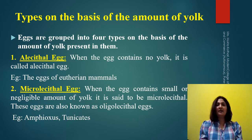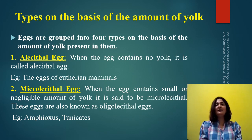If I consider the first type, that is alecithal type of eggs — here 'a' means 'not' and 'lecithal' means 'yolk' — so if the yolk is totally absent from the egg cell, there is absence of yolk in the egg cell, then these type of eggs will come under the alecithal type of eggs.